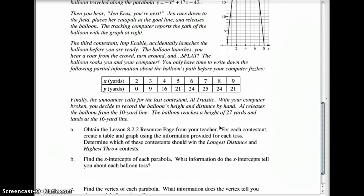Finally, the announcer calls for the last contestant. Al! With your computer broken now, you decide to record the balloon's height and distance by hand. Al releases the balloon from the 10-yard line. The balloon reached the height of 27 yards and then landed at the 16-yard line. You get to figure out the XY chart from that, and you also get to graph it from that.